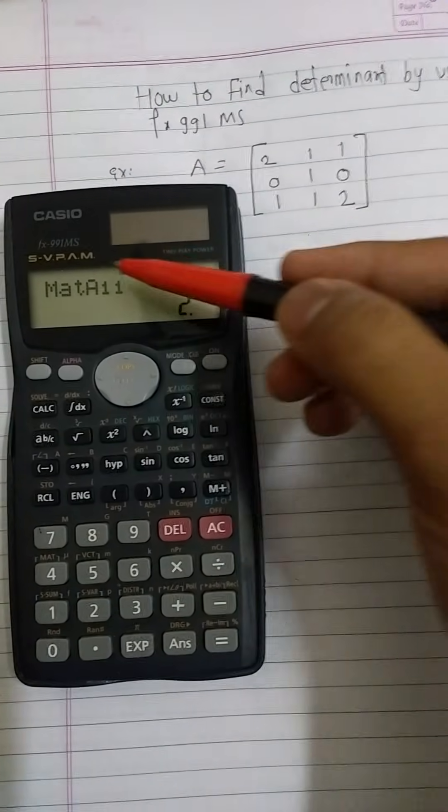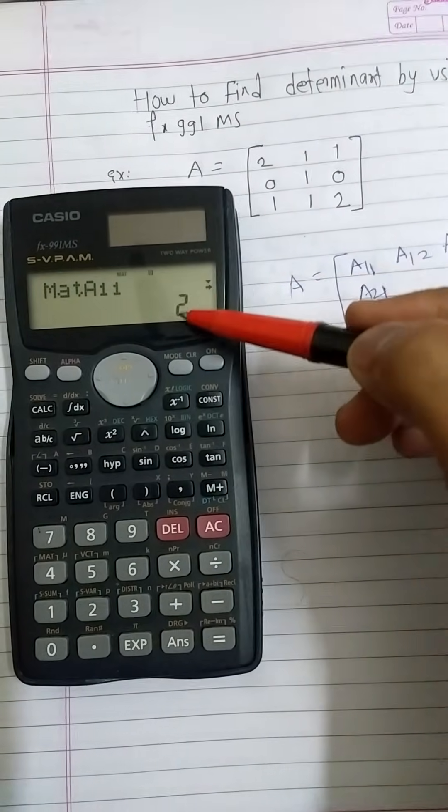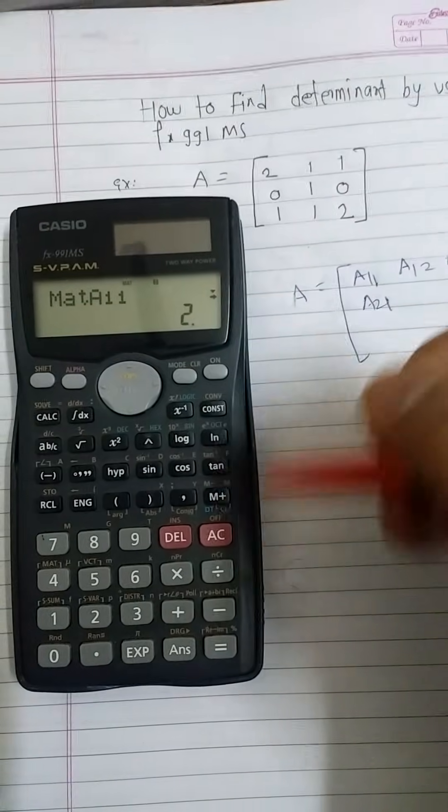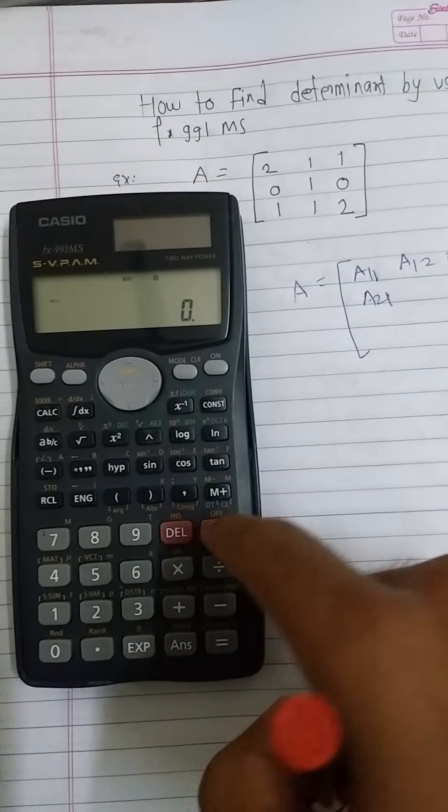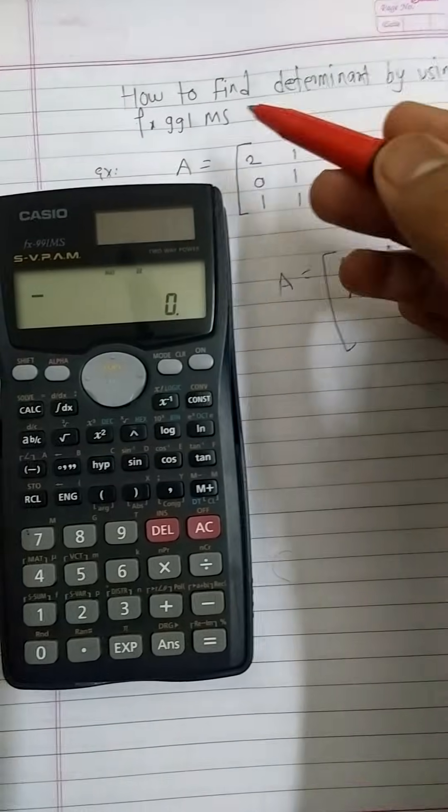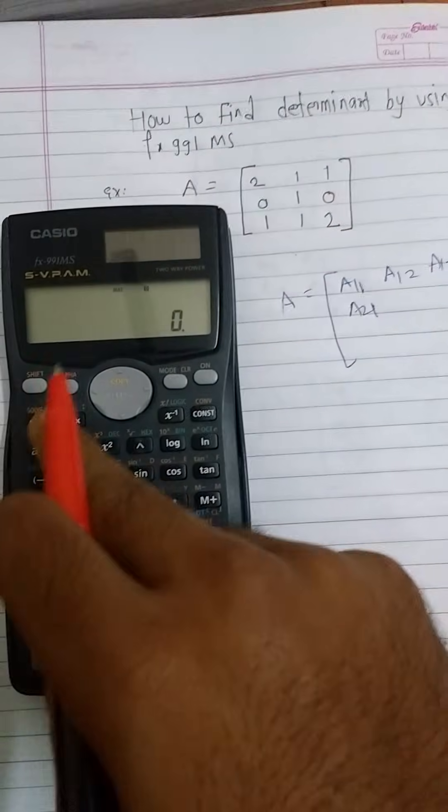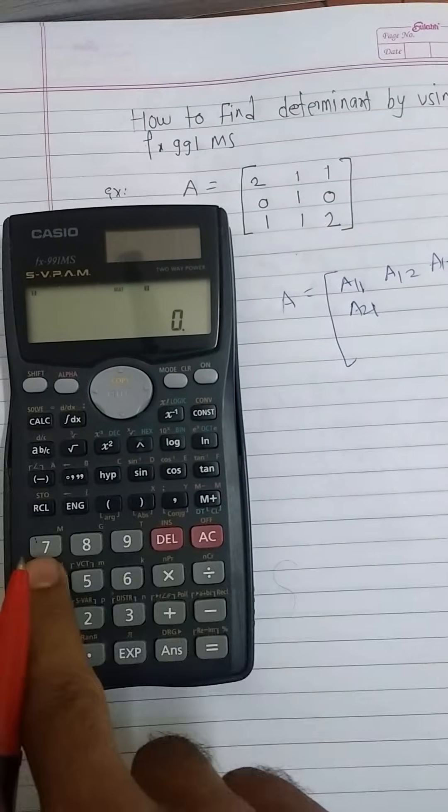After putting all your entries, again we will see MAT 1 1 2. Then to clear the screen, press AC button. Then our interest is to find out the determinant of the matrix. To find determinant, press shift and 4 again.